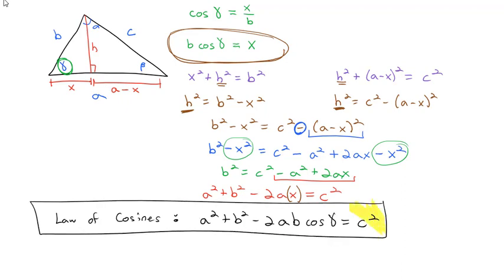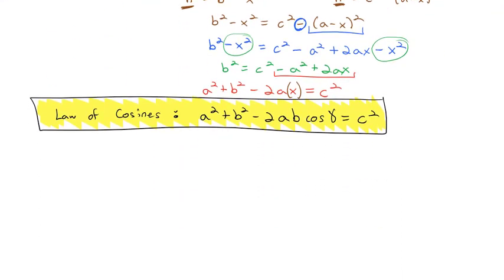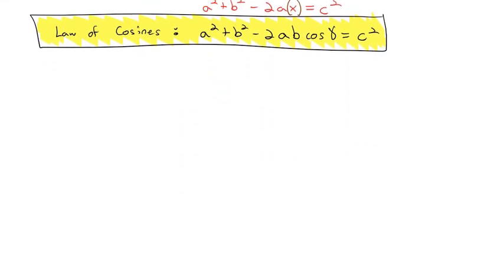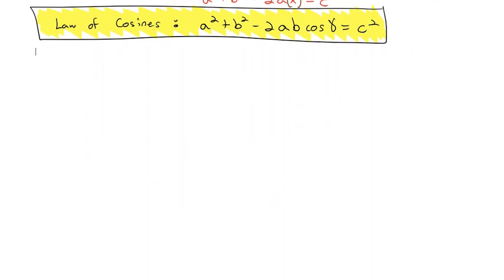The Law of Cosines is a formula you should commit to memory. We use it to solve a non-right triangle when we don't have the opposite angle-side relationship required for the Law of Sines. Whenever possible, use the Law of Sines — it's easier and quicker — but sometimes we can't because we have the wrong sides. Let's look at some examples.